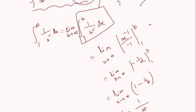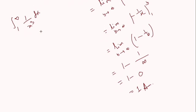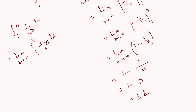Let us solve another problem: the integral from 1 to infinity of 1/x³ dx. By definition, we write: limit as b tends to infinity of the integral from 1 to b of 1/x³ dx. Integrating x⁻³ gives x⁻² divided by negative 2, evaluated from 1 to b.